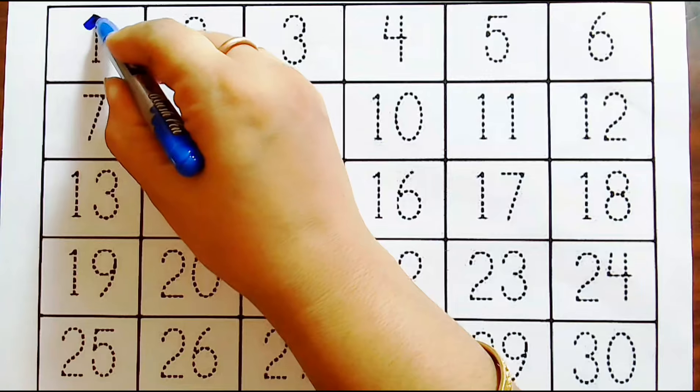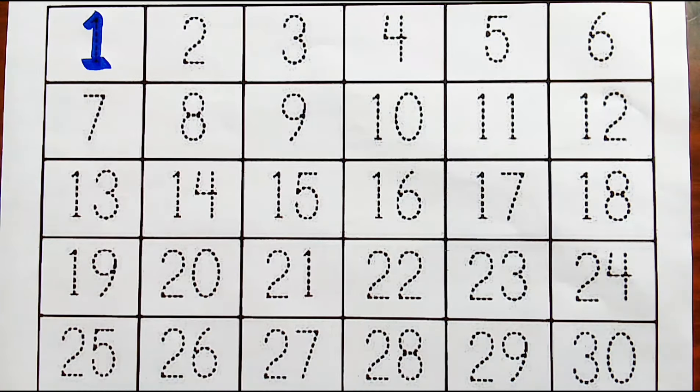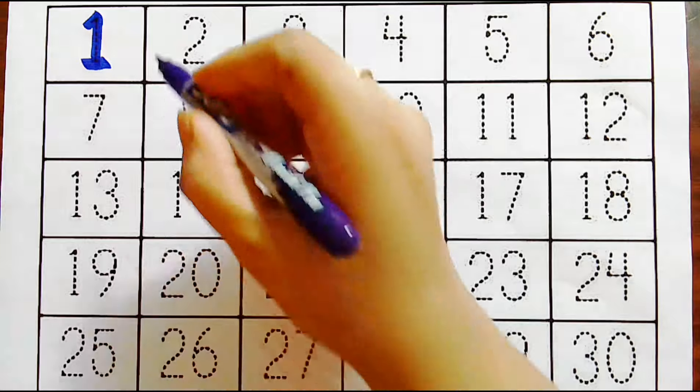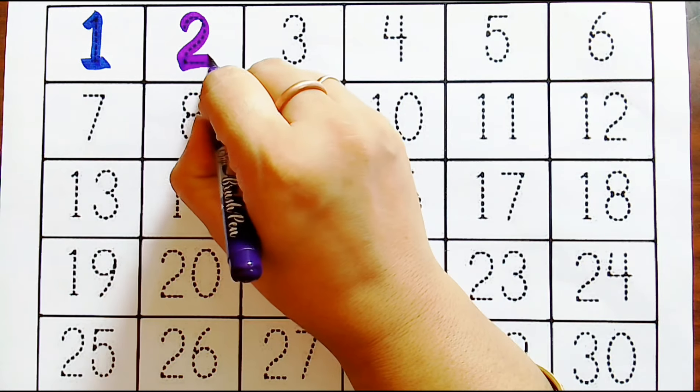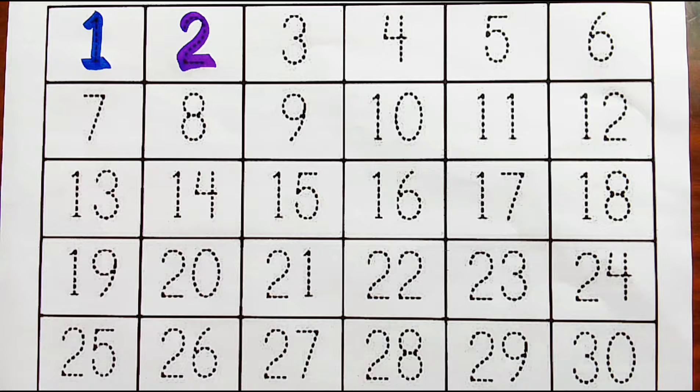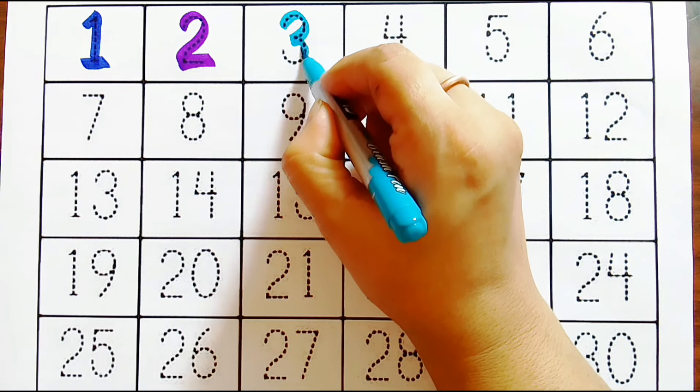Numbers. Blue color, one. Violet color, two. Sky color, three.